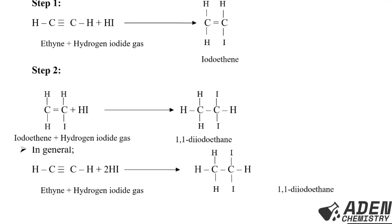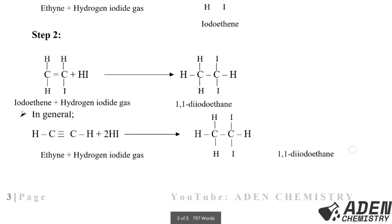Step two: iodoethene reacts with more hydrogen iodide to form 1,1-diiodoethane. The double bond breaks to form a single bond, placing both iodine atoms on the same carbon. If placed on different carbons, you get 1,2-diiodoethane. In general: ethyne + excess HI → 1,1- or 1,2-diiodoethane.